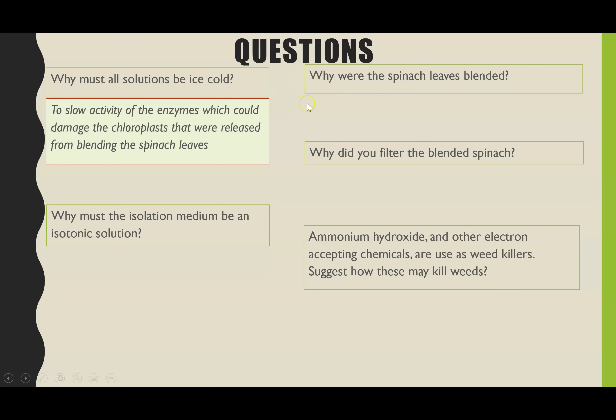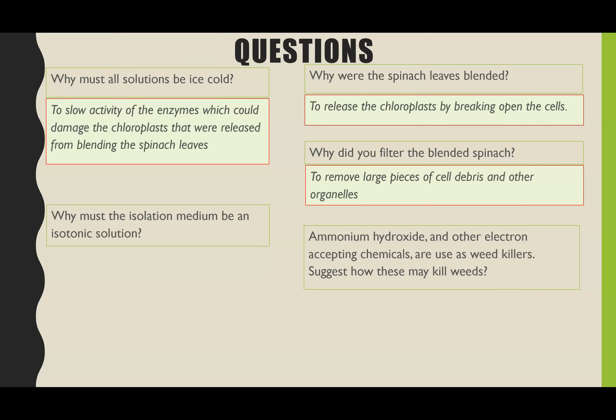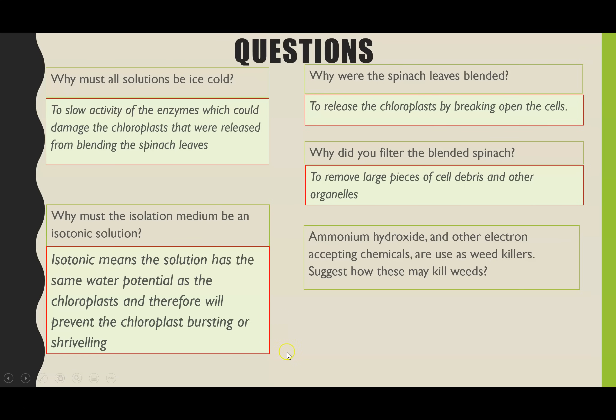Question two: why were the spinach leaves blended? This was to release the chloroplasts — breaking open the cells or homogenizing to release the chloroplasts. Question three: why did you filter the blended spinach? This was to remove the large pieces of cell debris and other organelles.